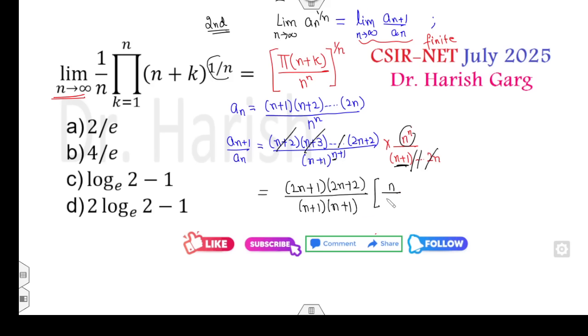Now you can take the limit as n approaches infinity. This value will be 2, 2, 1, and 1, so this number is 4. I can divide the n on the numerator and denominator. Answer is 4 divided by e, which is finite. So by the Cauchy second theorem, answer b is the correct answer of this problem.